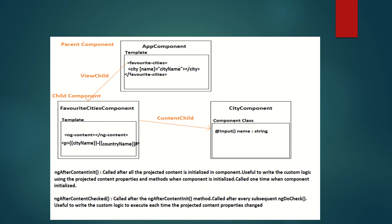Let us understand these two methods using a use case. An Angular application is using three components: AppComponent, FavoriteCitiesComponent, and CityComponent. In FavoriteCitiesComponent, the city name along with the country name is displayed. FavoriteCitiesComponent is used in AppComponent's template, so AppComponent is the parent and FavoriteCitiesComponent is the child. Within AppComponent's template, between the start and end tags of FavoriteCitiesComponent, we have used CityComponent, so CityComponent is projected into FavoriteCitiesComponent using ng-content.